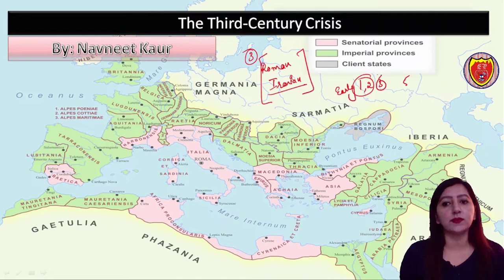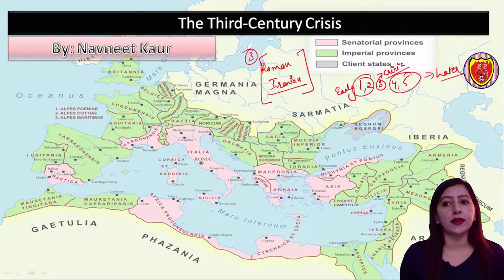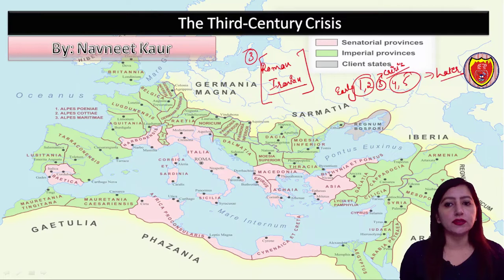In the third century there is a crisis, which started with tribes and rebellion. After that, we are talking about the fourth and fifth century, which is called the later Roman Empire.